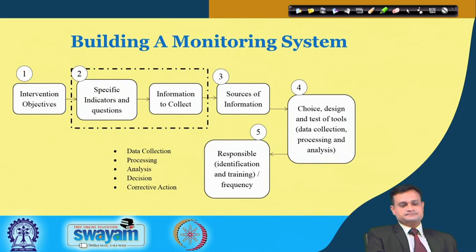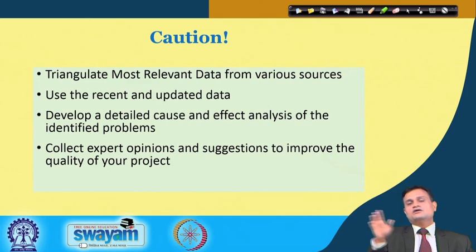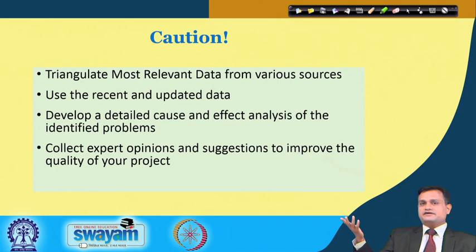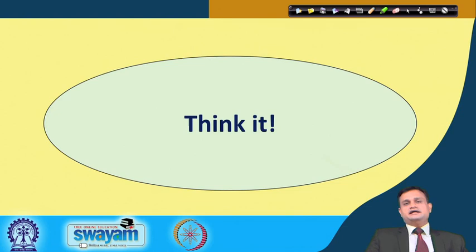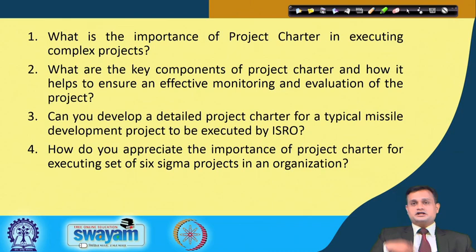A caution: triangulate the most relevant data from various sources, because you may get biased if data is collected from only one source. Use recent and updated data, develop a detailed cause and effect analysis of identified problems, and collect expert opinions and suggestions to improve the quality of your project. With this, as our regular practice, I would like to end the session with a couple of think-it questions to help you stay on track with our Six Sigma course and continuously motivate you to think more critically and in a deeper way.